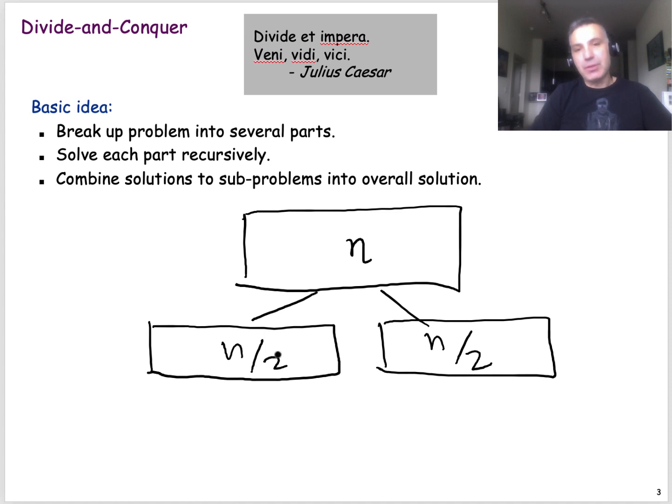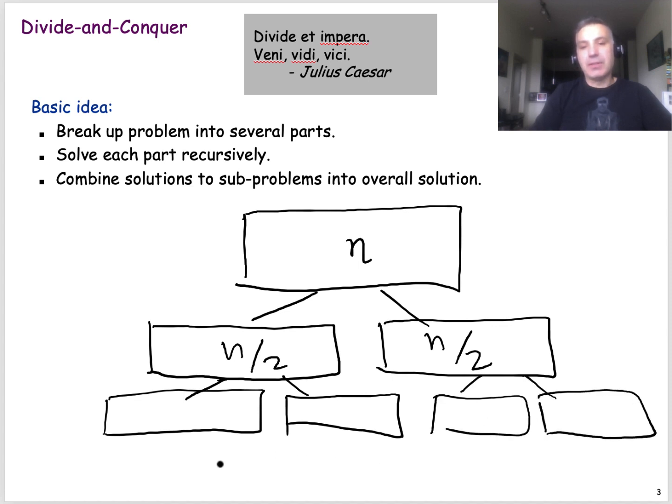If n is very small, for example just two numbers, you can do this trivially without any recursion. You can just compare two numbers. But if n is larger than that, then you continue the recursion at each level splitting the problem into smaller problems of a certain size. For instance, here it could be n over 4, n over 4, n over 4, and n over 4.